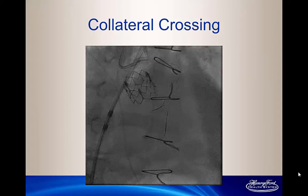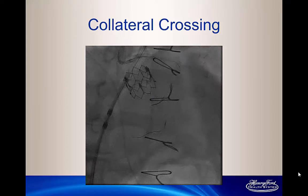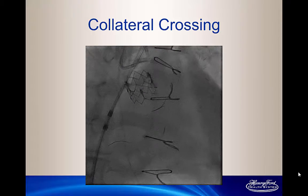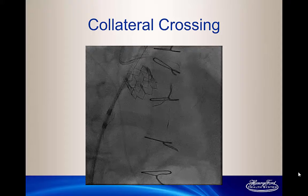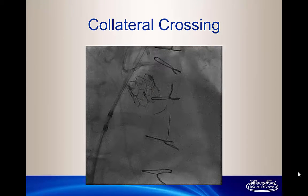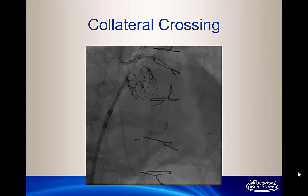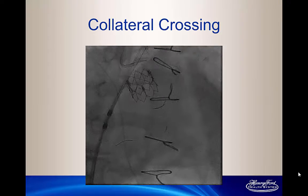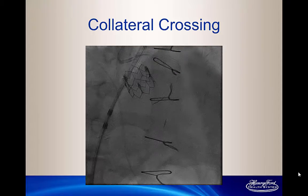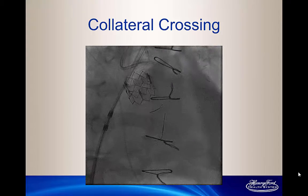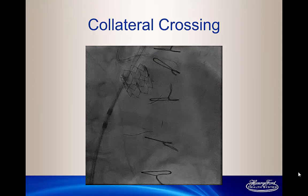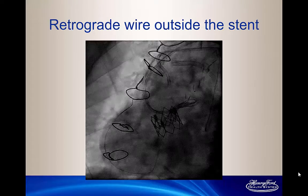This patient has an ambiguous proximal cap, obviously. A very long occlusion — you can only see a little bit of the RCA — poor distal targets, and very good collaterals. So this patient is a good candidate for a primary retrograde technique, especially because he has a flush ostial occlusion. We used a Sion wire in addition to Turnpike LP in the first septal, and this is real-time crossing into the circumflex.